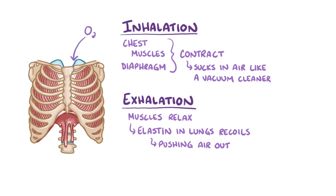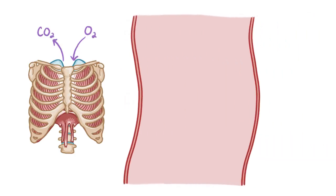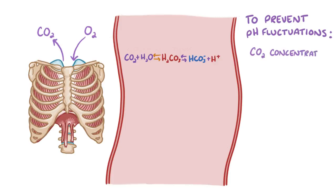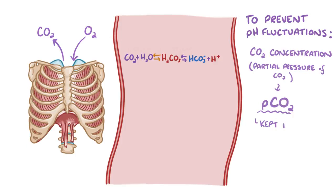Ultimately, the lungs need to pull oxygen into the body and get rid of carbon dioxide. Carbon dioxide binds to water in the blood and forms carbonic acid, which then dissociates into hydrogen ions and bicarbonate ions. So in order to prevent pH fluctuations, the carbon dioxide concentration, or the partial pressure of carbon dioxide called pCO2, needs to be kept within a fairly narrow range. For this reason, the lungs maintain the ventilation rate they need to get rid of carbon dioxide at the same rate that it's created by the tissues.